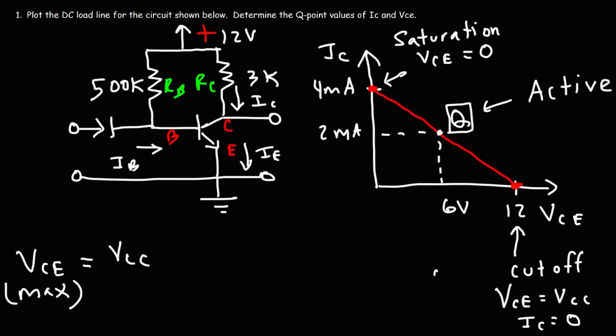In the cutoff region, the transistor is off — this is when VBE is less than 0.6 volts. In the saturation region, it doesn't work as an amplifier anymore; it's going to introduce distortion. At that point, IC no longer equals beta times IB. If you increase IB, IC doesn't go up under saturation.